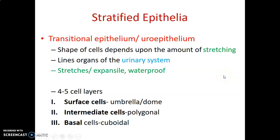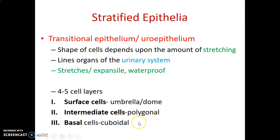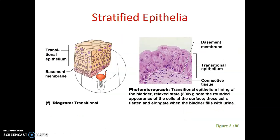How do you characterize transitional epithelium? It has four to five cell layers where the surface cells are umbrella-shaped or dome-shaped, so they tend to form a curve. The intermediate cells are polygonal, while the basal cells are cuboidal in shape — as tall as they are wide.